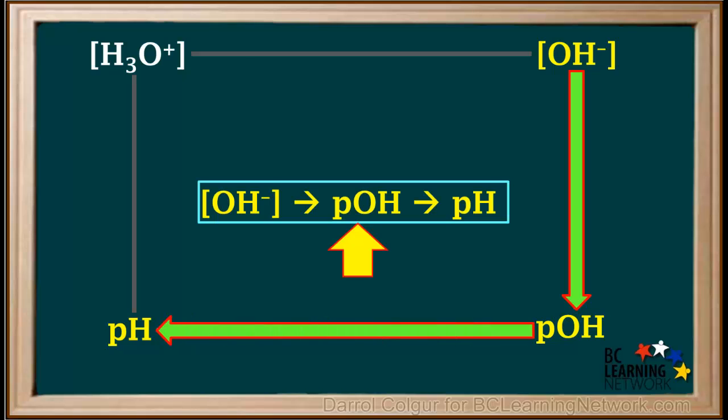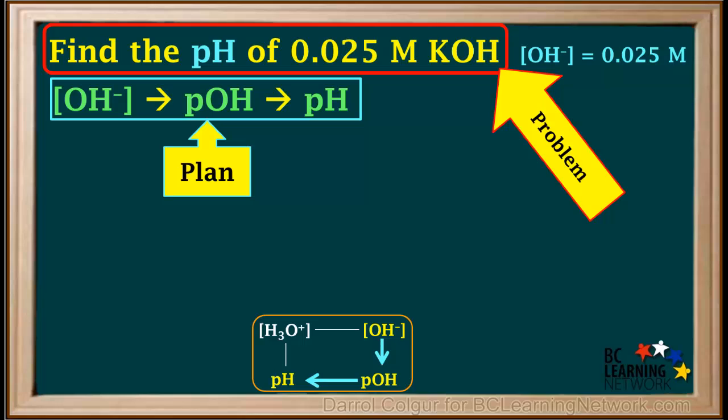Going from concentration of hydroxide to pOH to pH is the way we'll do it here. Here's the problem again, along with the plan we came up with.